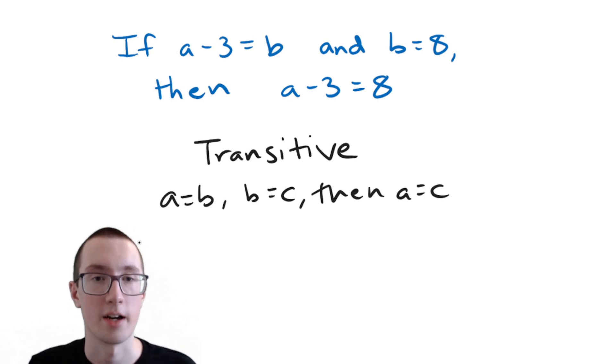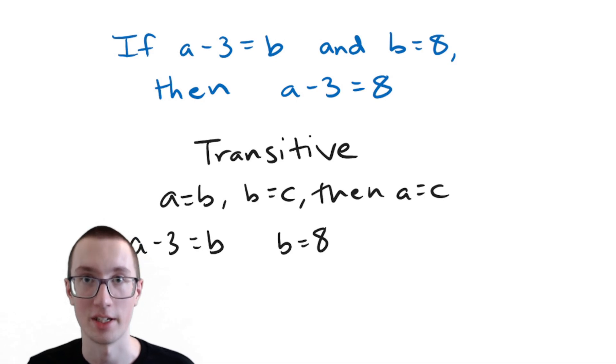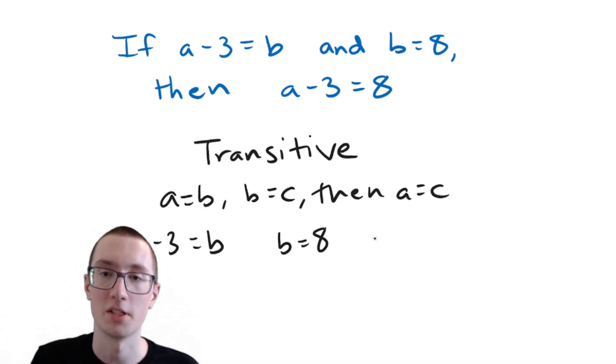then A has to equal C. So does that fit this equation? Well, let's see. We have A minus three equals B, and we have B equals eight. We have our first thing, A minus three, equaling our second thing, B. And the second thing, B, equals the third thing, eight.